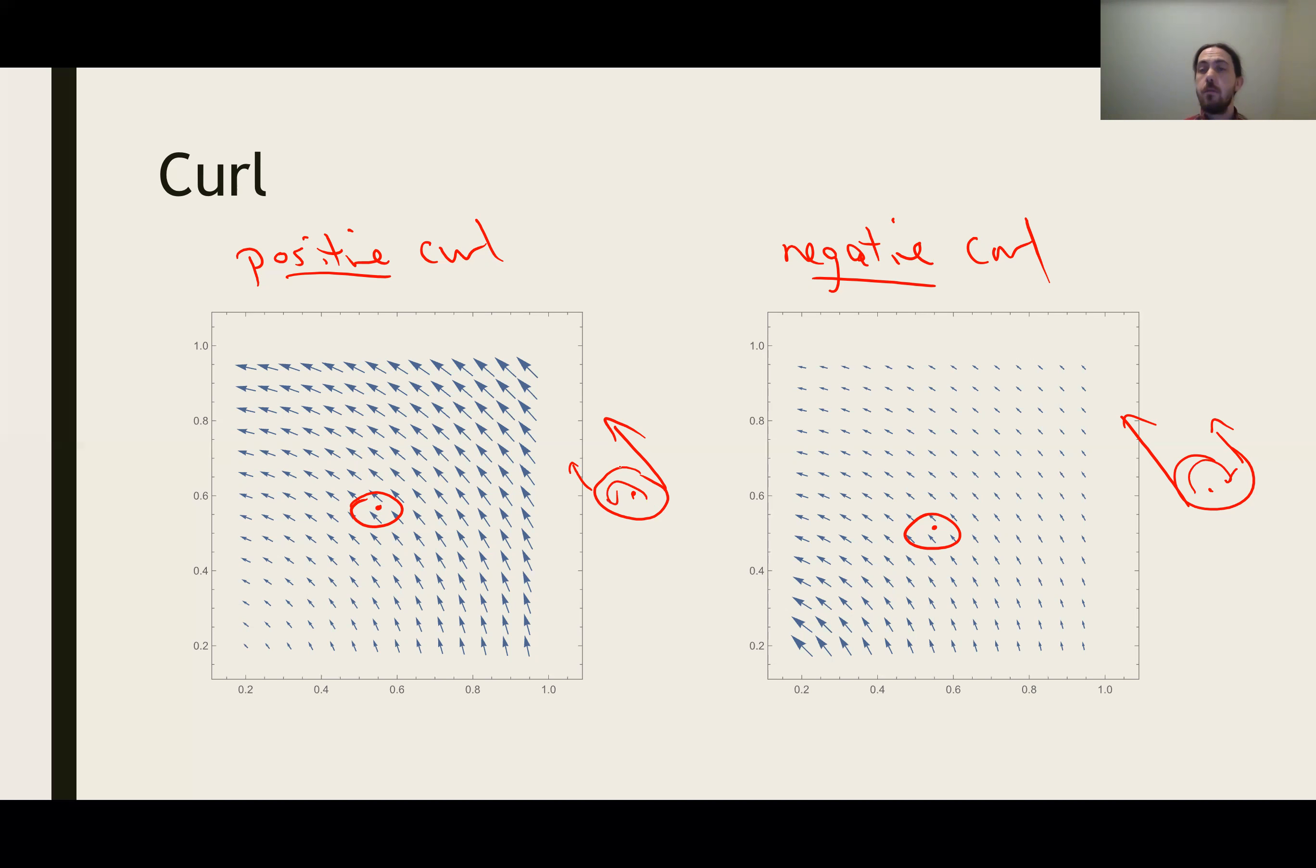So that's why divergence and curl can be confusing is that without actually calculating them, they can be very, very sensitive to exactly what's going on locally as opposed to the global features.